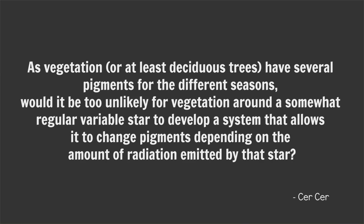As vegetation, or at least deciduous trees, have several pigments for the different seasons, would it be too unlikely for vegetation around a somewhat regular variable star to develop a system that allows it to change pigments depending on the amount of radiation emitted by that star? It's not too unlikely, but there are a couple of problems with it. The big one is that variable stars — non-main-sequence stars that vary, a group we call variable stars — aren't great candidates to host habitable planets. But that said, loads of people speculate that in Game of Thrones the reason why the seasons are all bonkers is because of a variable star. So if it works for them, it could work for you. Assuming you're okay with that, you could just say that your star varies at such a rate that it would be advantageous for your plants to change colour — maybe the star varies its output on the order of weeks or months.